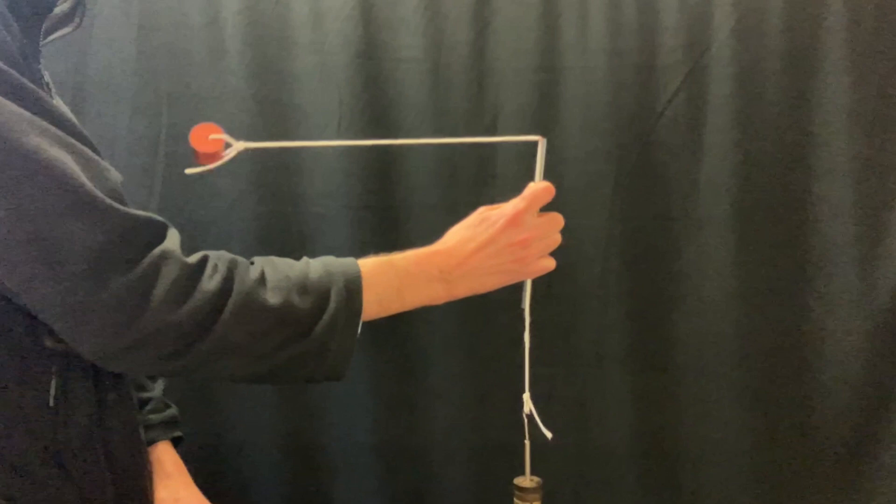I'm going to call the mass of the bung little m and the mass hanging on the far end big M, which means that the weight acting down from the mass hanging on the end is Mg.